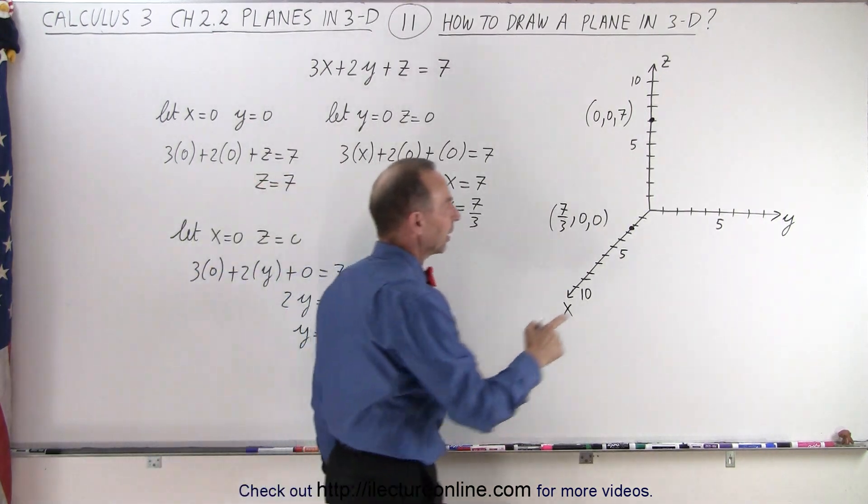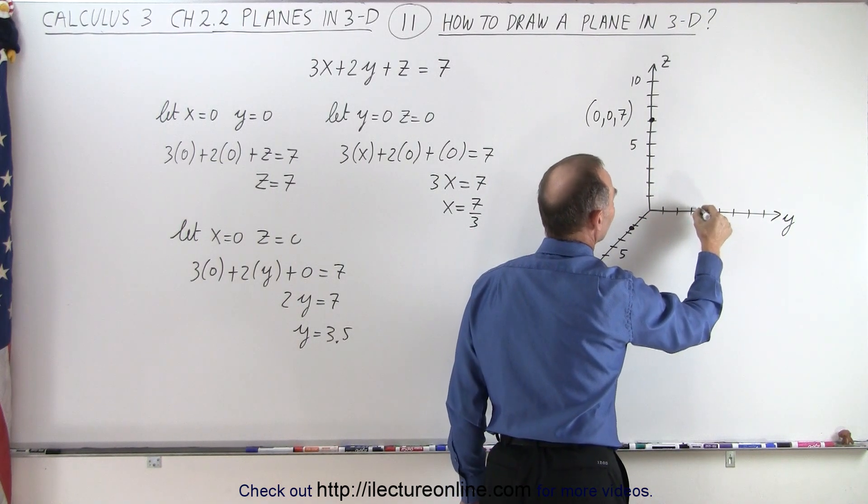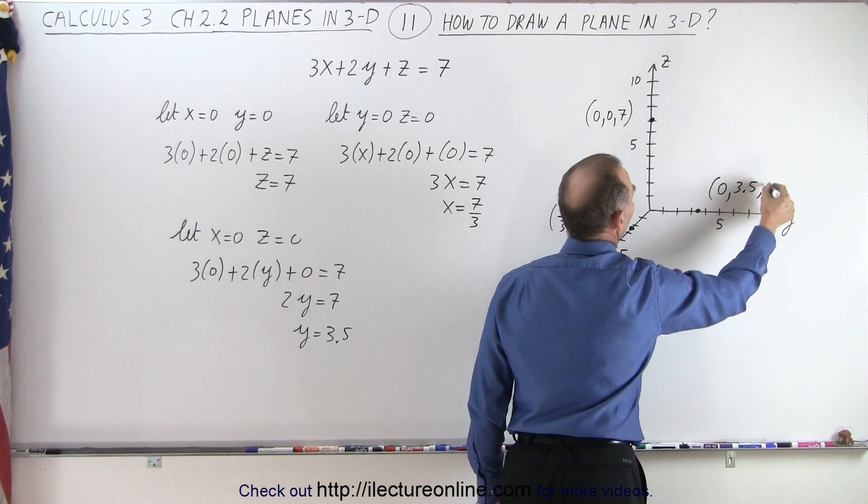And we find that point on the line right here. When x and z equal zero, we're at 3.5 there. And so that's the point zero, 3.5, and zero.